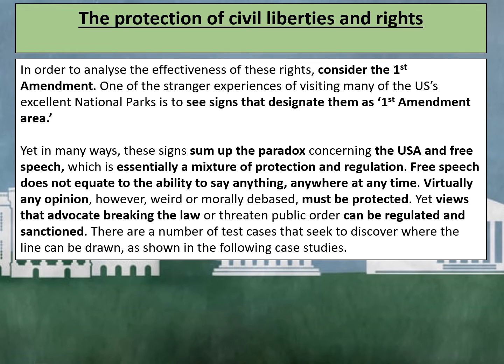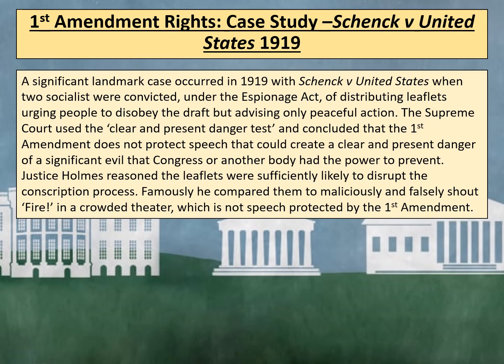There are a number of test cases that seek to discover where the line can be drawn. The First Amendment right case study of Schneck versus the United States in 1919: a significant landmark case occurred when two socialists were convicted under the Espionage Act of distributing leaflets urging people to disobey the draft, but advising only peaceful action. The Supreme Court used the clear and present danger test and concluded that the First Amendment does not protect free speech that could create a clear and present danger of a significant evil that Congress or any other body have the power to prevent. Justice Holmes reasoned that the leaflets were sufficiently likely to disrupt the conscription process.